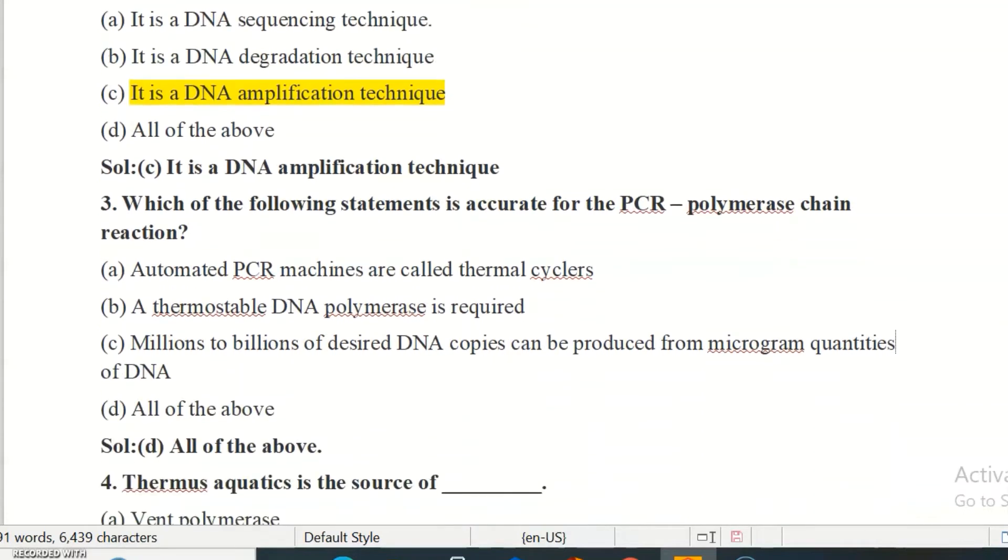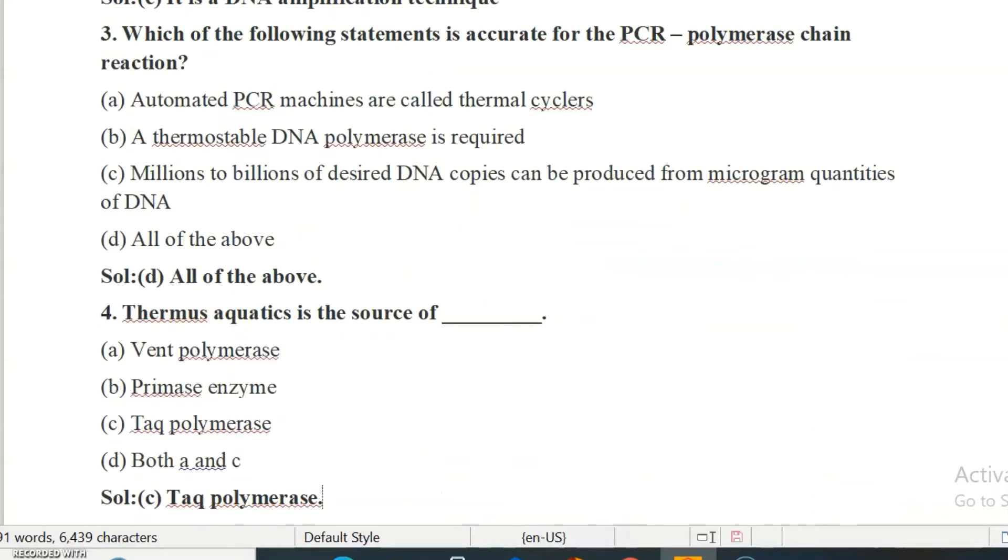Option A: automated PCR machines are called thermal cyclers. Option B: a thermostable DNA polymerase is required. Option C: millions to billions of desired DNA copies can be produced from microgram quantities of DNA. Option D: all of the above. The correct option is D, all of the above.